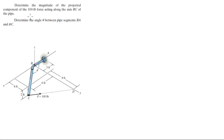Let's determine the magnitude of the projected component of the 100 pound force acting along the axis BC of the pipe, so acting along this axis, and then determine the angle between BC and BA, which is this angle right here.